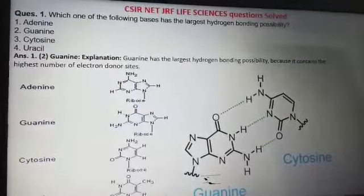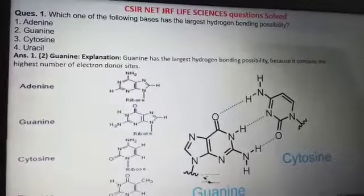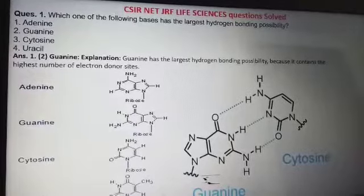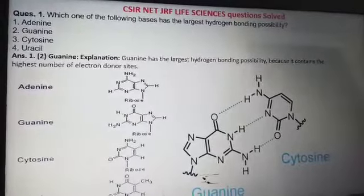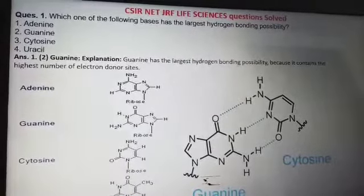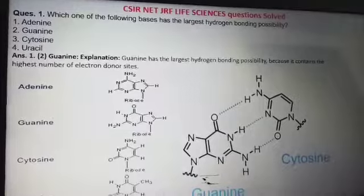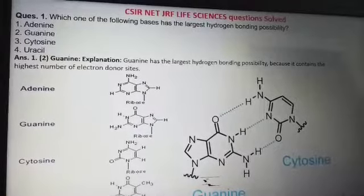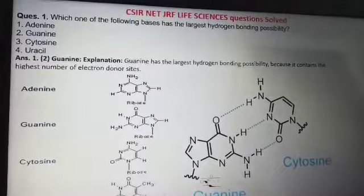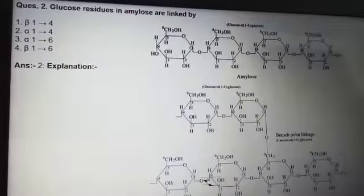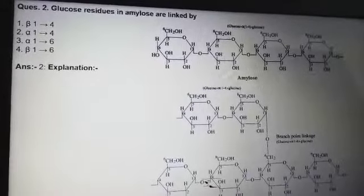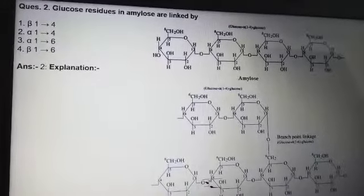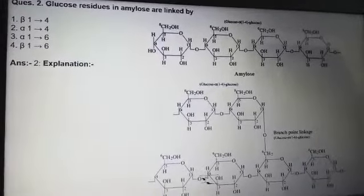So now you know that it is because of the electron-donating sites of guanine that it forms a larger number of hydrogen bonds. Let's go to the next question: glucose residues in amylose are linked by which of the given linkages?